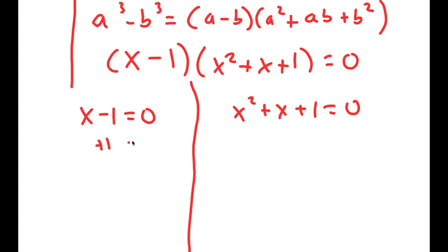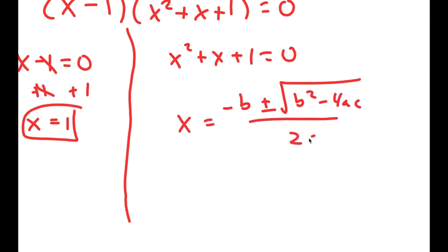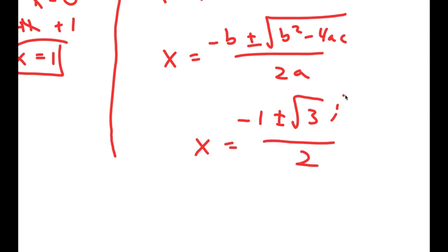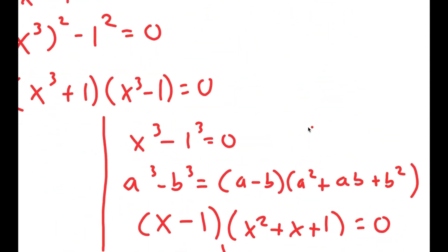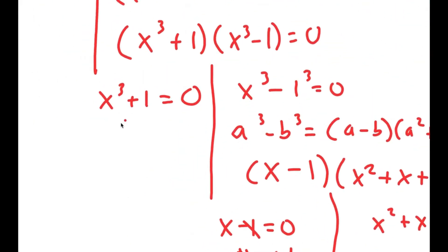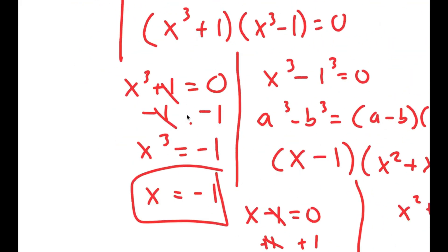For x minus 1 equals 0, all I have to do is add 1 on both sides and I get x equals 1. For x squared plus x plus 1 equals 0, I can use the quadratic formula. By using it, I get x is equal to negative 1 plus or minus the square root of 3i, over 2 — so these are two more solutions. For x to the power of 3 plus 1 equals 0, subtracting 1 on both sides gives x to the power of 3 equals negative 1, meaning x is also equal to negative 1.